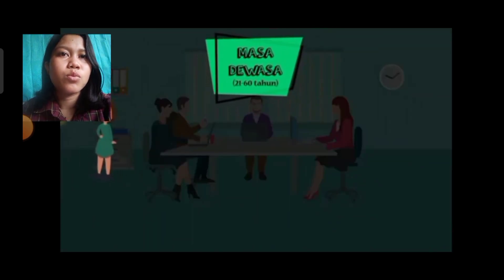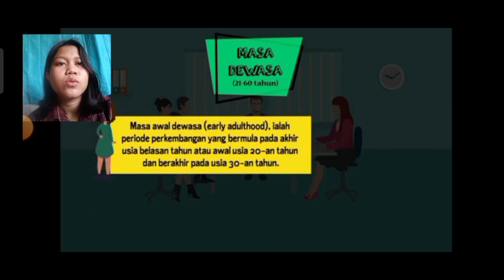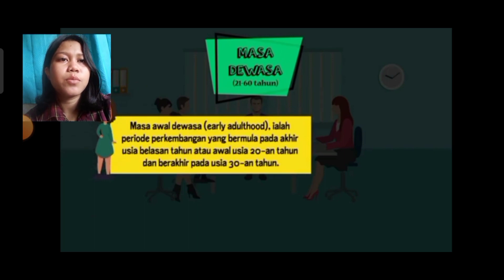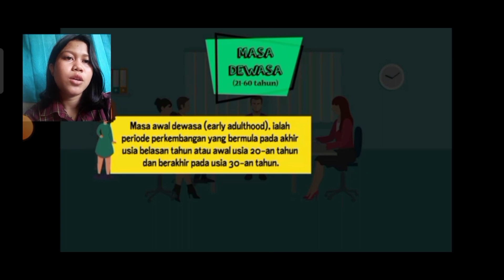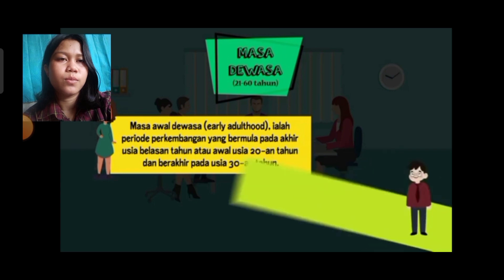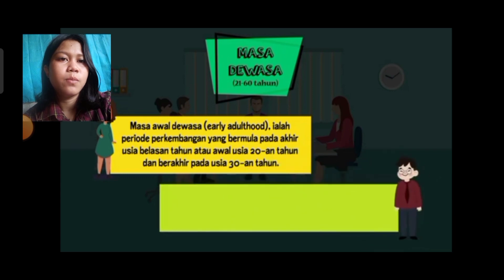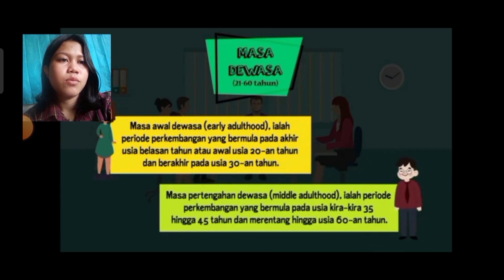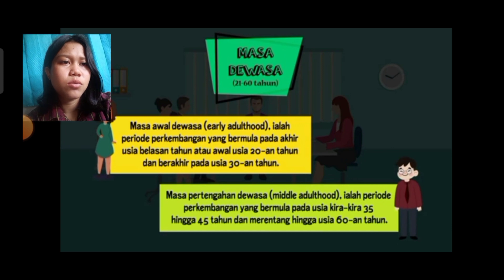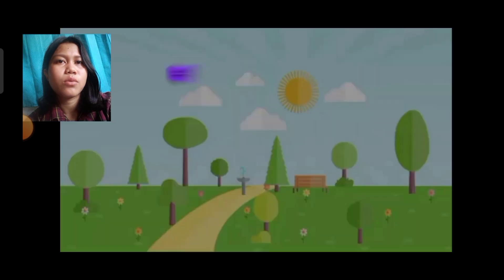Masa dewasa berlangsung dari 21 sampai 60 tahun. Masa awal dewasa adalah periode perkembangan yang bermula pada akhir usia belasan tahun atau usia awal 20-an tahun dan berakhir pada usia 30-an tahun. Masa pertengahan dewasa merupakan periode perkembangan yang bermula pada usia kira-kira 35 hingga 45 tahun dan merentang hingga usia 60-an tahun.